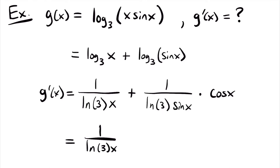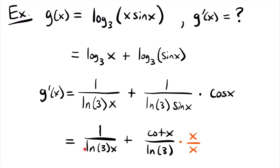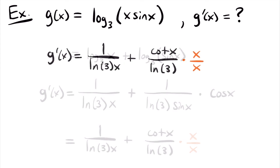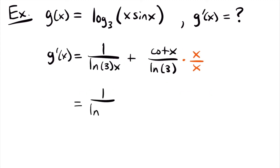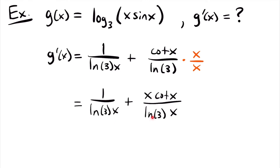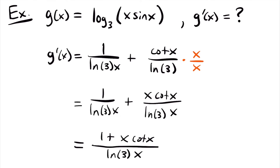We can simplify and rewrite the derivative to be equal to 1 divided by the natural log of 3 times x, plus cotangent of x divided by the natural log of 3. To simplify further, let's combine these two fractions by getting a common denominator. The first term has the natural log of 3 times x in the denominator, and the second term has just the natural log of 3. Multiplying the second term by x over x, we get a common denominator, and we can combine them to have 1 plus x times cotangent x divided by the natural log of 3 times x.